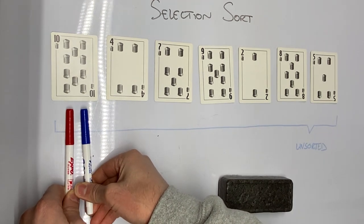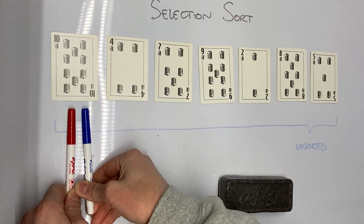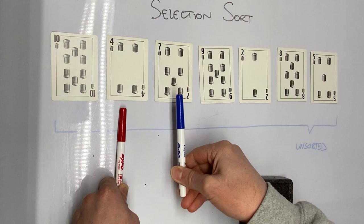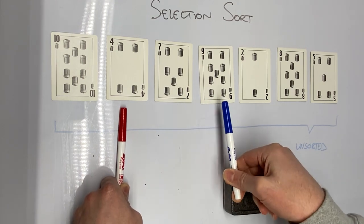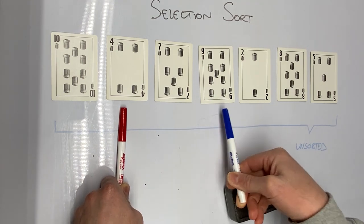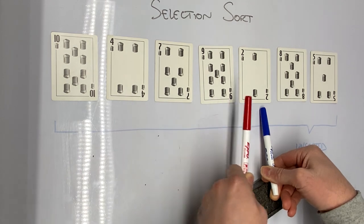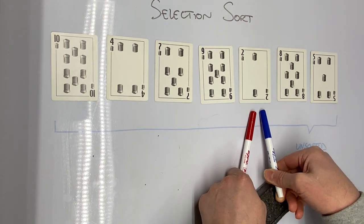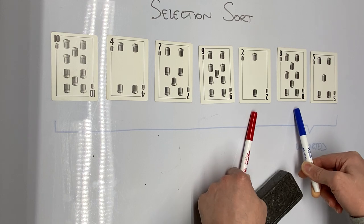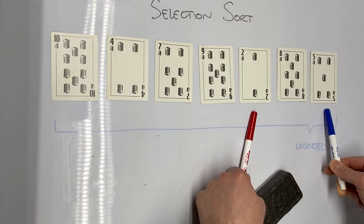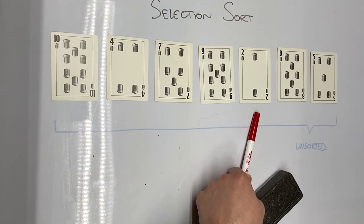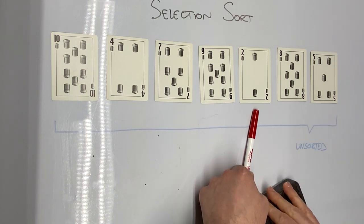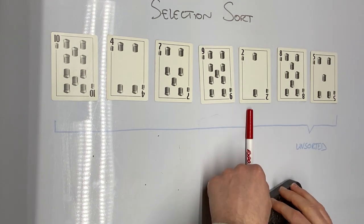Starting with the first card, which is the 10 — it's currently the least. I look at the four; it's now the least. I look at the seven — not the least. I look at the nine — not less than four. I look at the two — that is less than four, so I'll keep track that the two is the smallest. I look at the eight — not less than two. I look at the five — not less than two. So this card, the two, has the least value in the unsorted region.